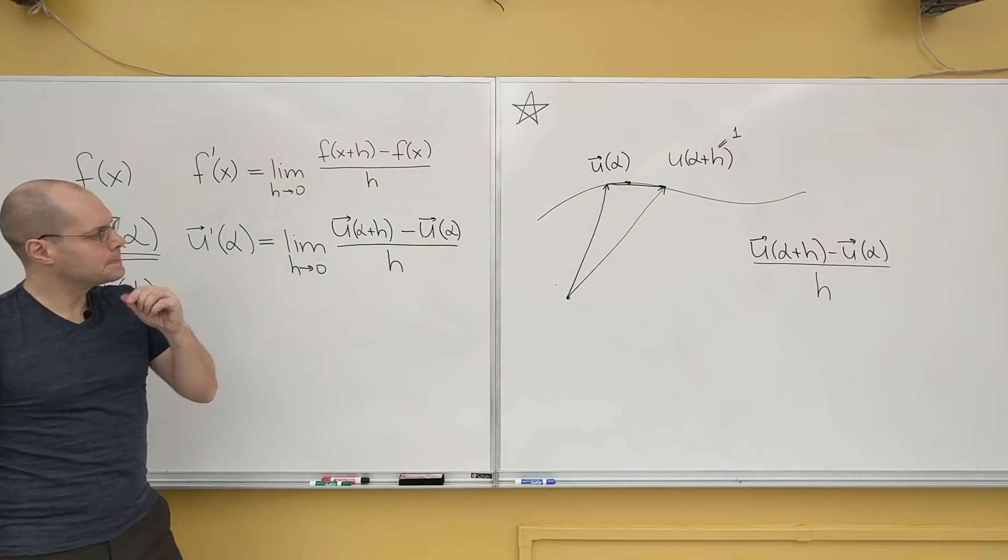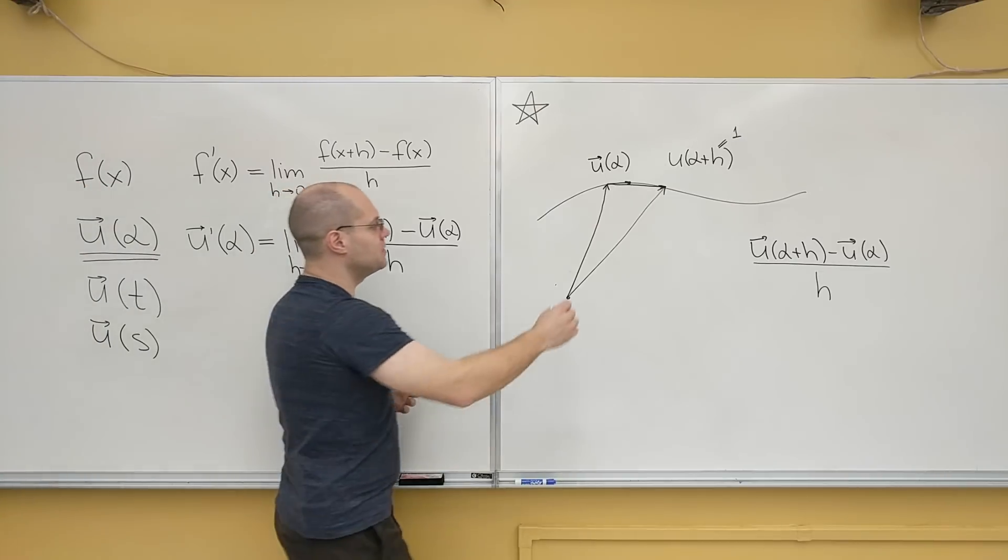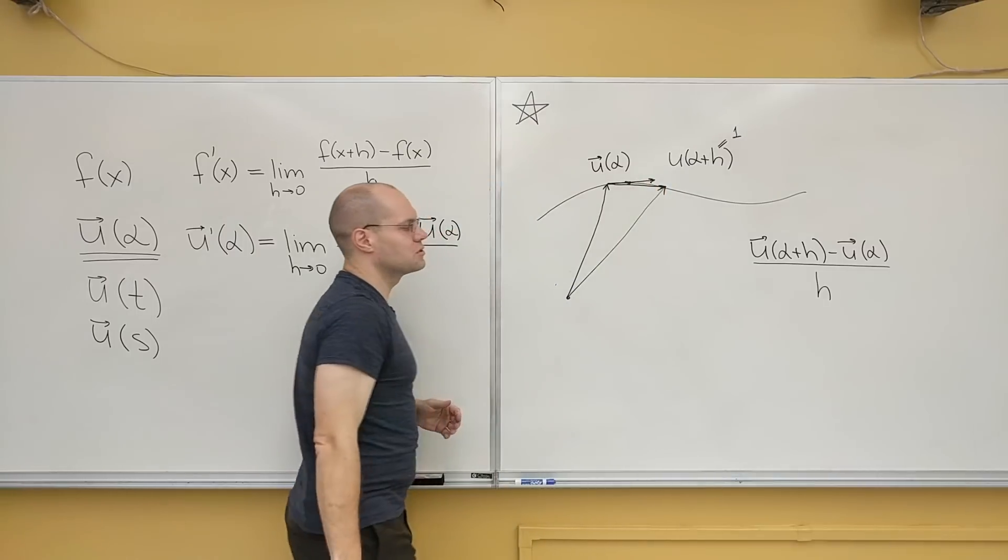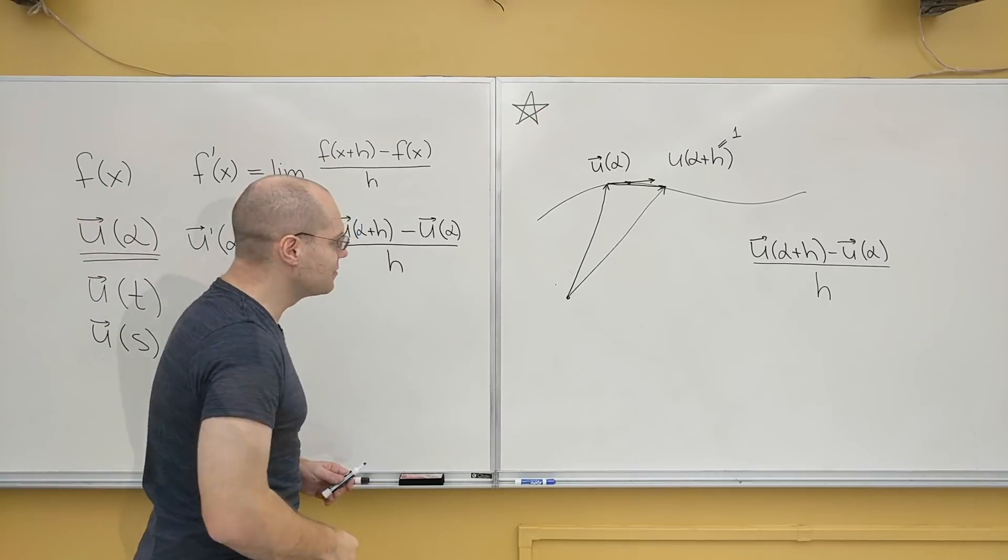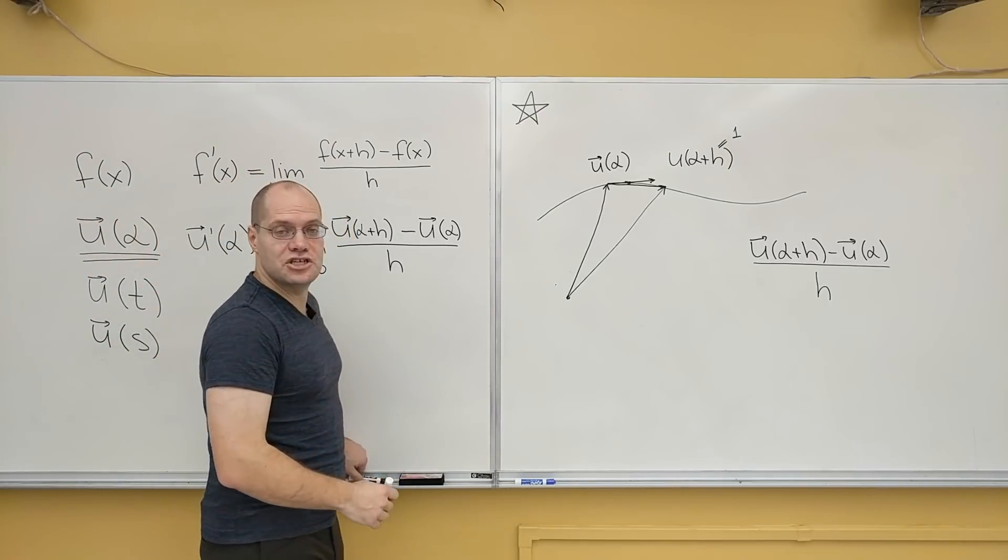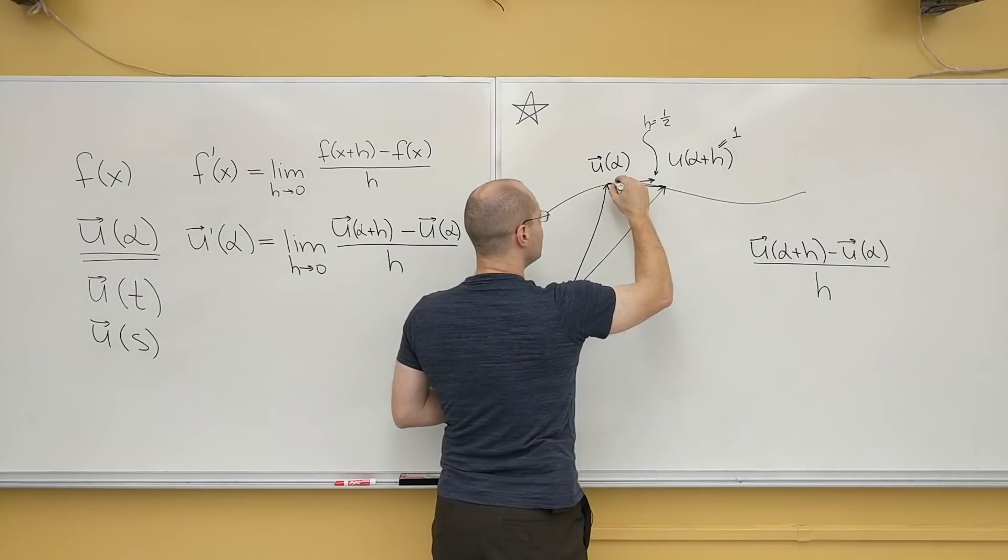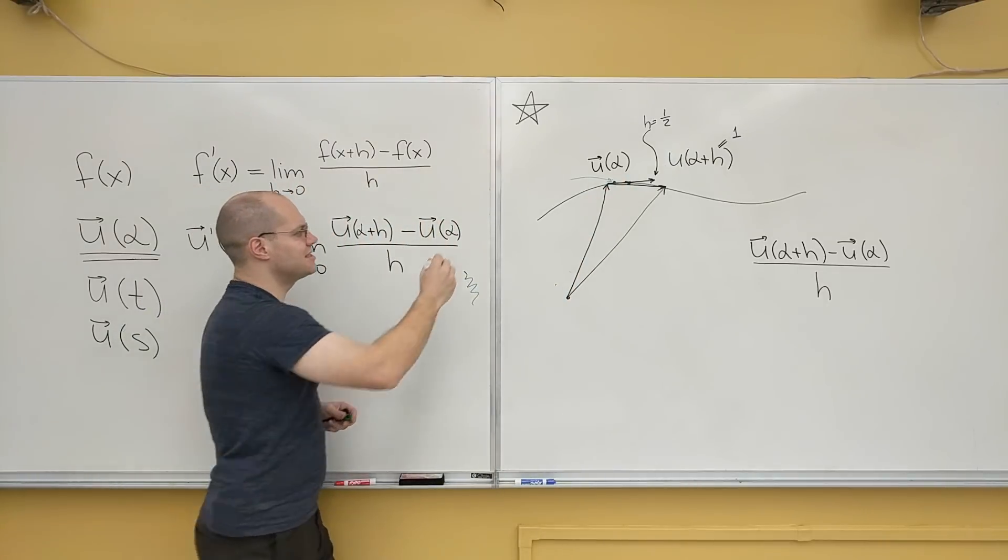And now I have to divide by 1 half, which means that it will end up being this vector right here. So that's what we're looking at right here. Next, I need a different color. I will take h equals 1 tenth.